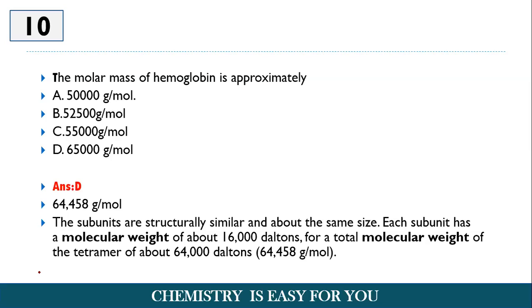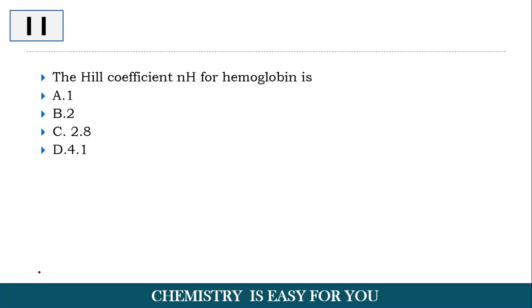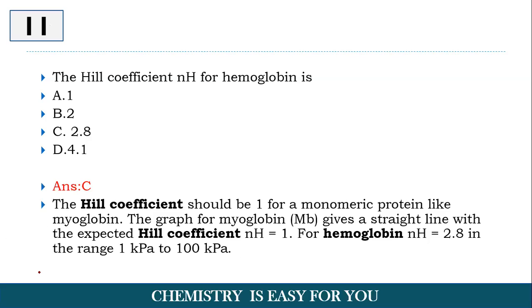Let's move further. So the last question today is the Hill coefficient NH for hemoglobin is, is it 1, 2, 2.8 or 4.1? So the answer is option C, 2.8. The Hill coefficient should be 1 for a monomeric protein like myoglobin. So we know that myoglobin is a monomeric protein whereas hemoglobin as we have discussed in the previous question is a tetramer and it consists of four subunits and these four units together make up the hemoglobin.